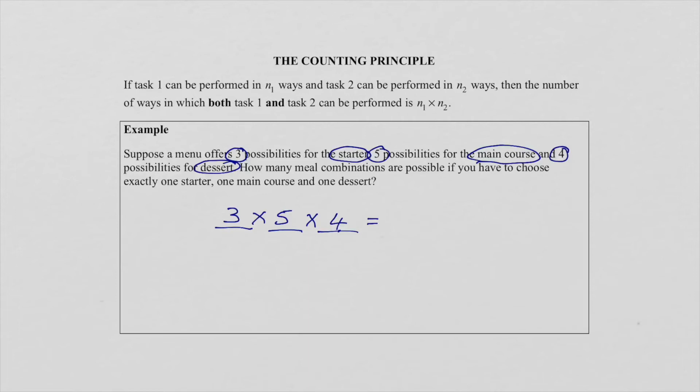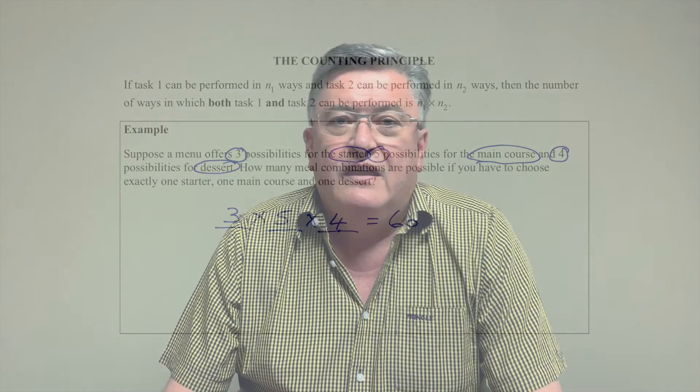And for this particular example, that is now how many meal combinations there will be. And that gives us a total of 60 when we multiply this. It's a very exciting topic. So for our next lesson, we will take it one step further.